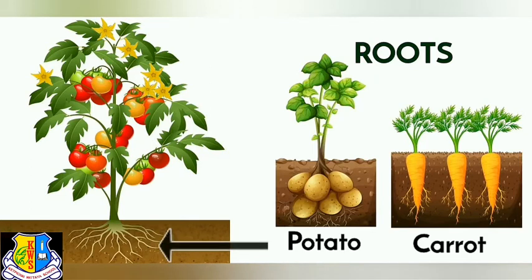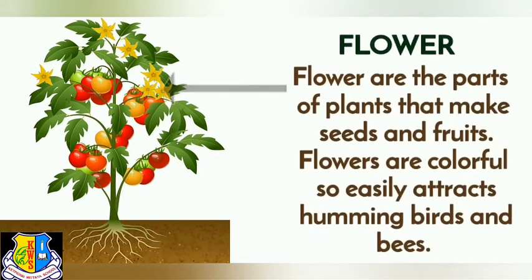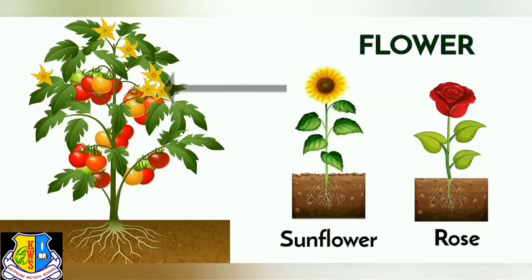Next one is flower. Flowers are the parts of a plant that make seeds and fruits. Flowers are colorful so they easily attract hummingbirds and bees. Some of the flowers we like are sunflowers and roses.